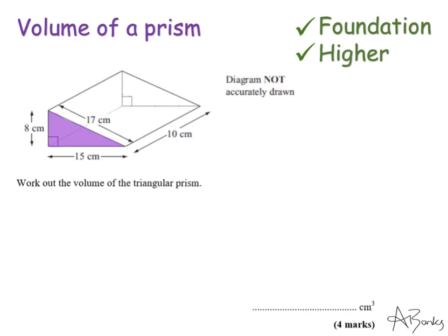So this is my cross-section. To find the volume of the shape, I find the area of this cross-section and then multiply by its depth — by how far back this 3D shape goes. My first step is to find the area of this triangle. The area of a triangle is a half multiplied by its base. The base here is 15, multiplied by its perpendicular height, which in this example is 8 — not this side length here. So that is 60.